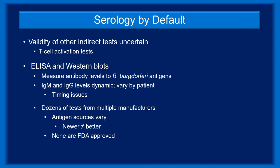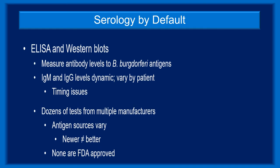Most indirect tests for Borrelia burgdorferi are generally not in use in the United States. T-cell activation tests for Lyme disease, which are analogous to interferon gamma release assays for tuberculosis, are unfamiliar to many U.S. clinicians. Thus, we are left by default with serology — specifically ELISA and Western blot tests. Both identify antibodies, IgM, IgG, or both, to Borrelia burgdorferi antigens.